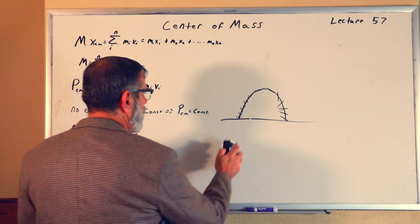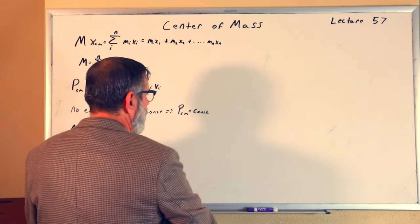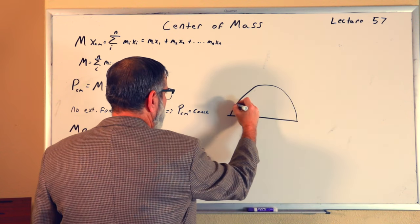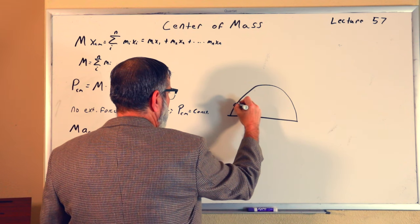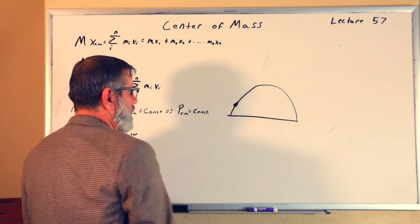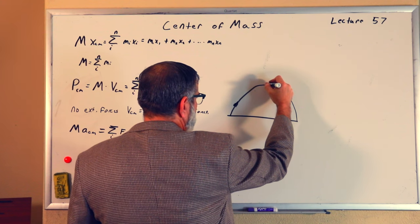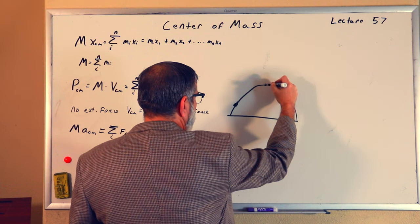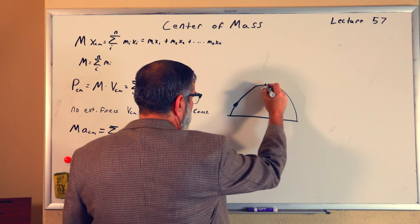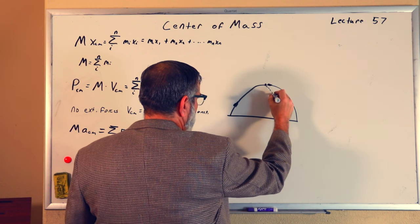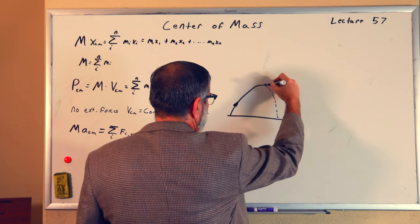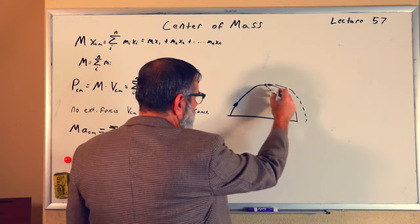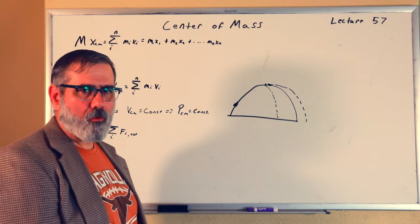Let's look at a simpler example. If I launch an artillery shell up a parabolic trajectory and it explodes at the top, breaking into two pieces — one piece takes a path down this way and the other lands over there — but the center of mass will remain on the same parabolic trajectory throughout, even after the explosion.